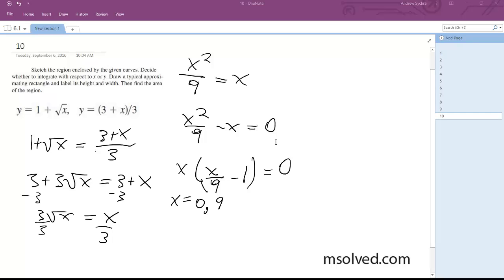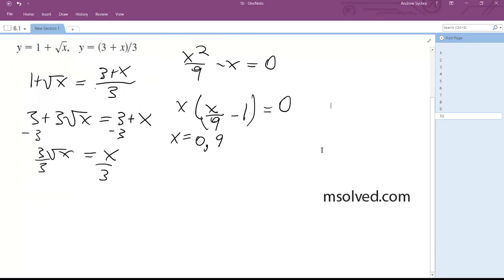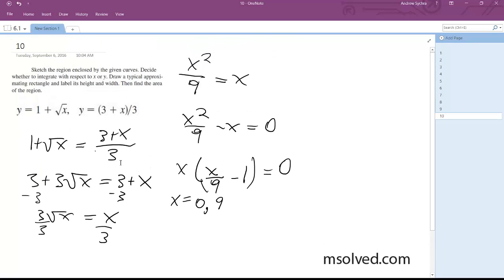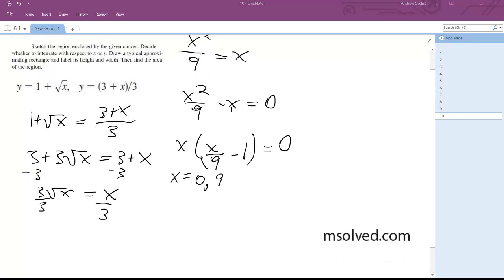Alright so what we're going to do next is now I know what I need to integrate from. And because I know 1 plus root x is the top line, it's going to look something like this. Shade in here.